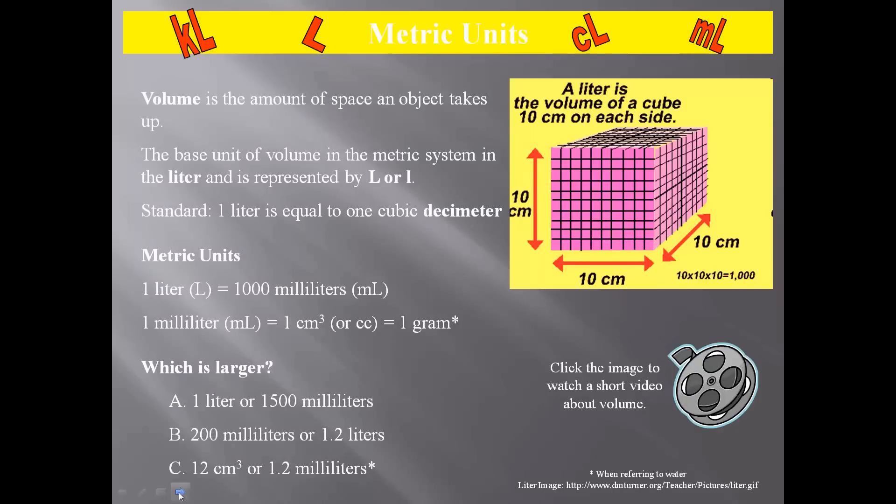When you start talking about volume, it's the amount of space an object takes up. In the metric system, the basic unit is the liter. Sometimes you'll see this represented by a capital L or a lowercase l. The standard: one liter is equal to one cubic decimeter, which is a three-dimensional object, 10 centimeters by 10 centimeters by 10 centimeters.